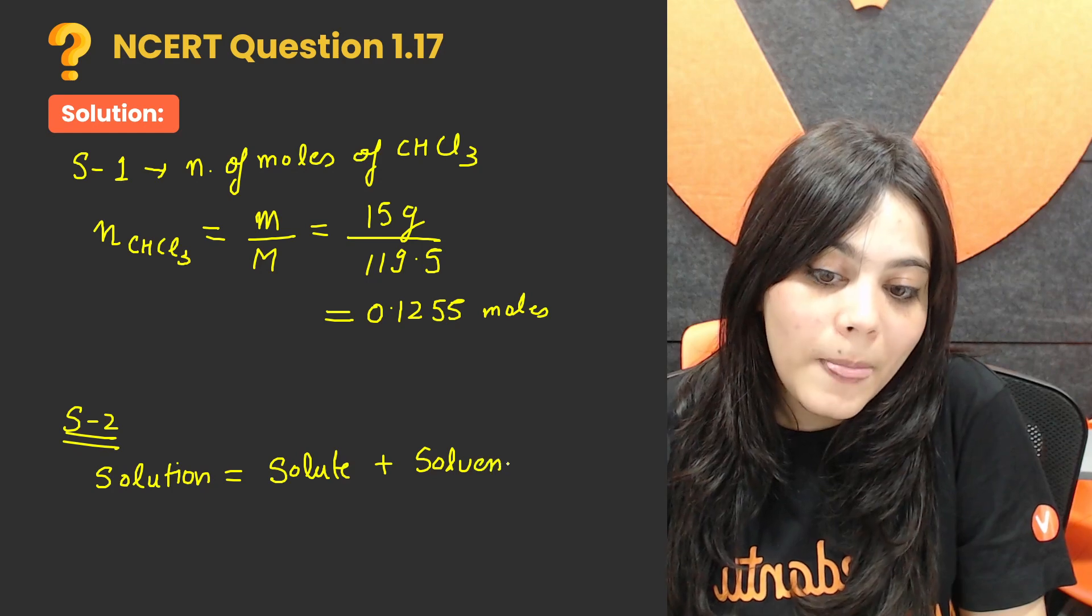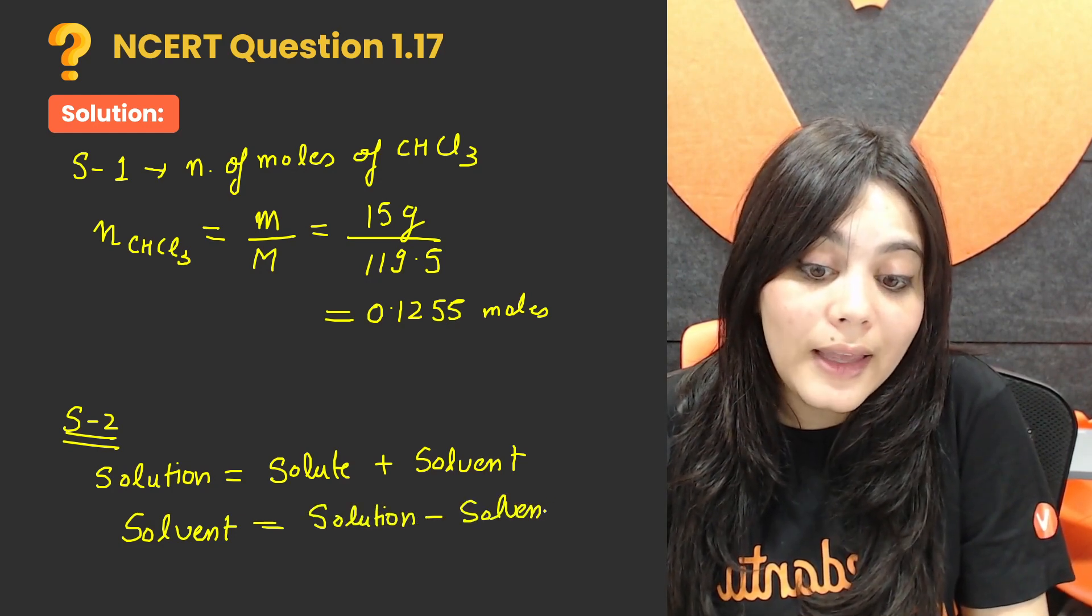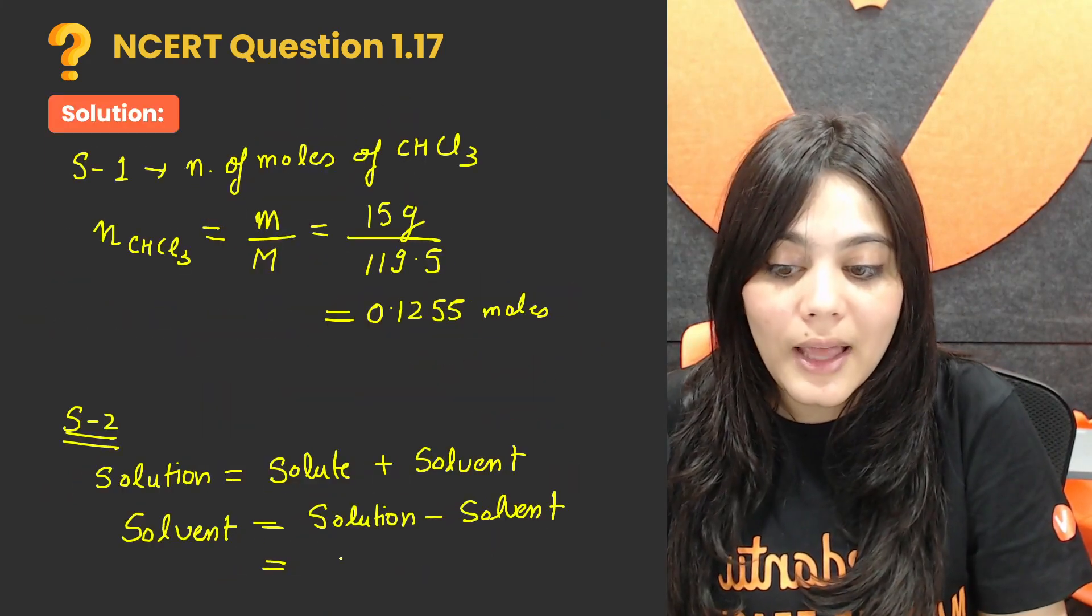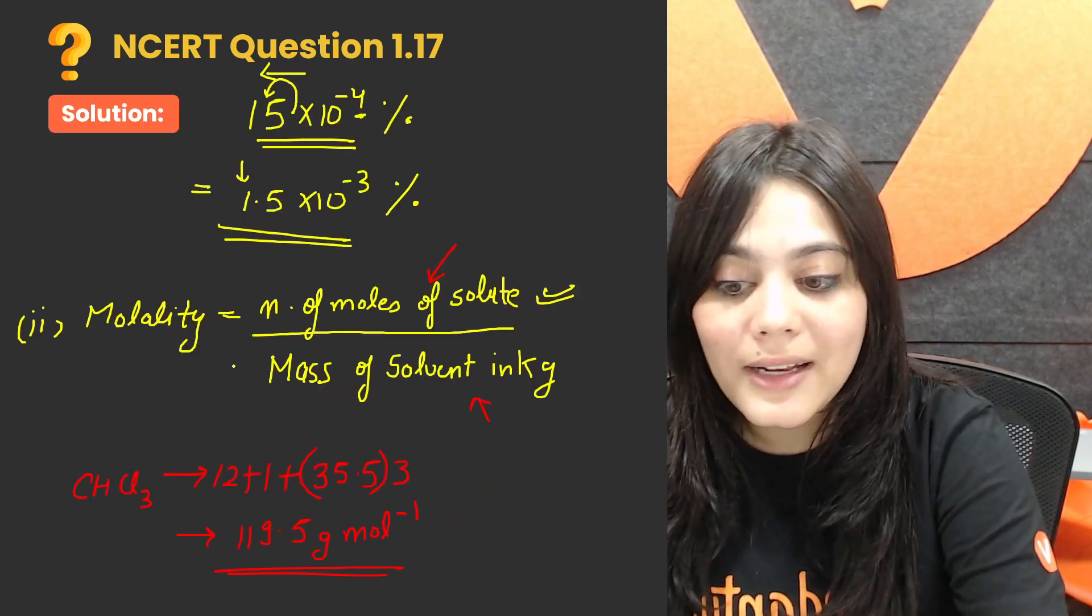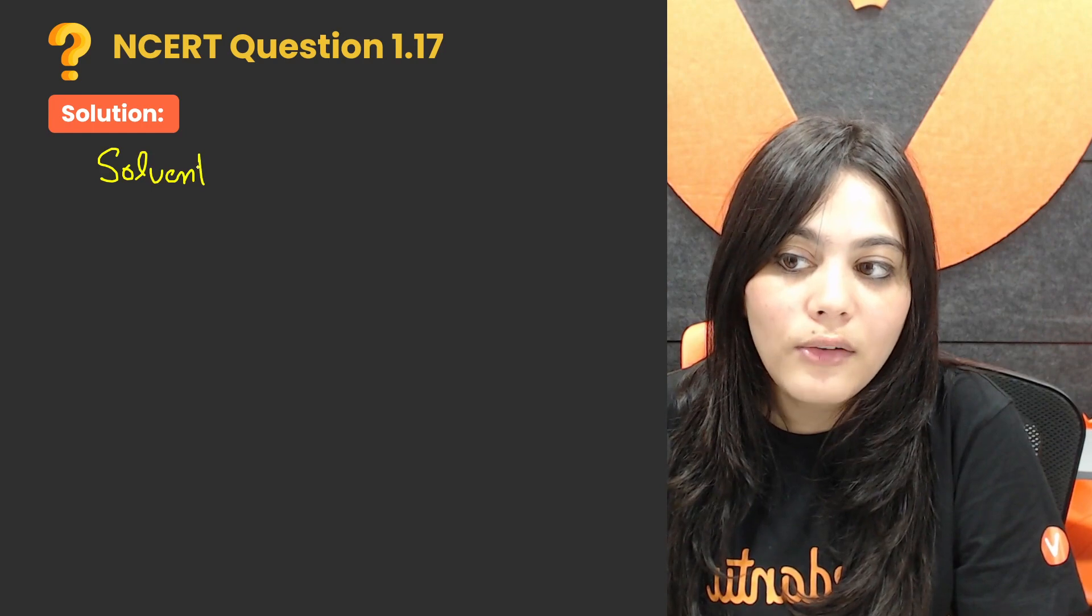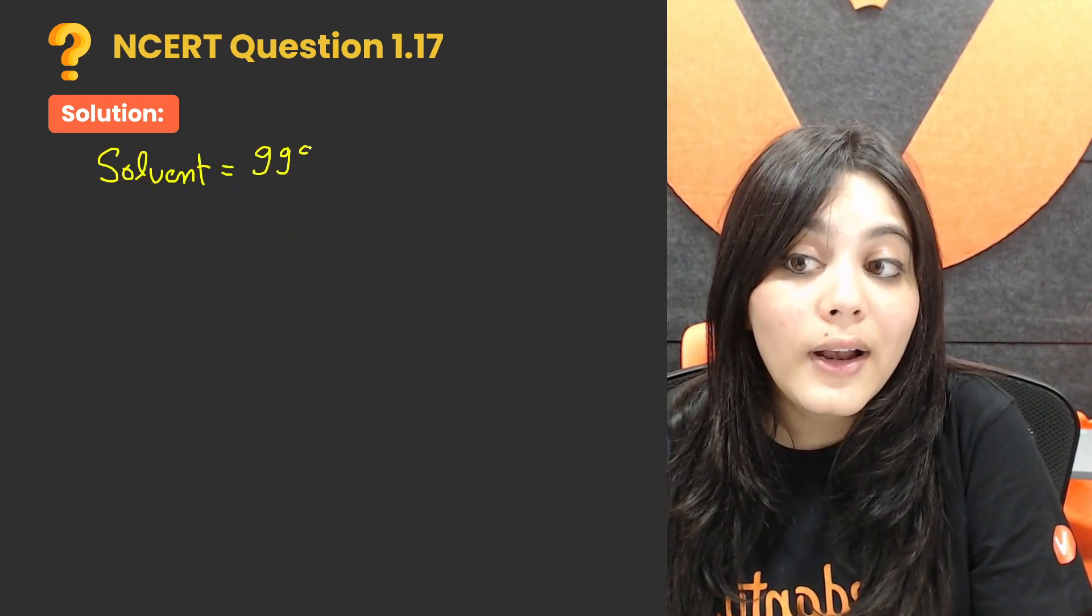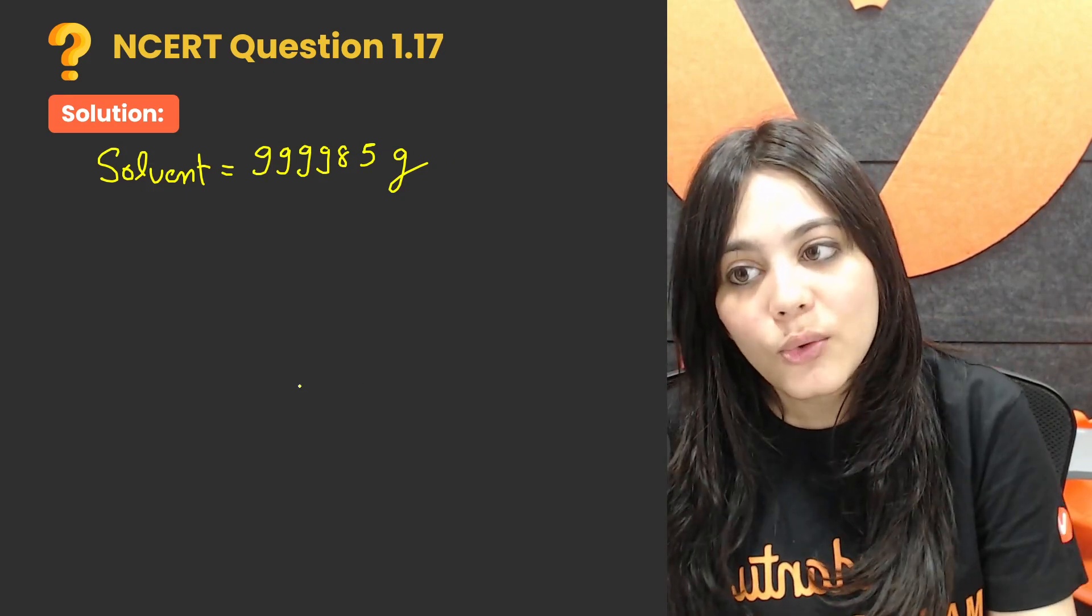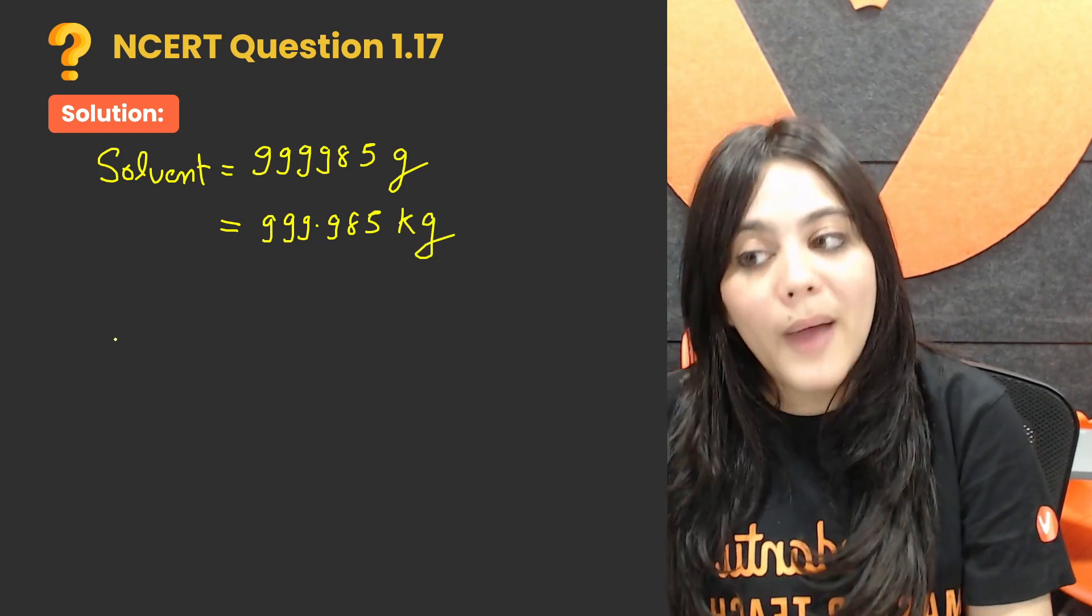Step two, now I need mass of solvent in kilogram. Mass of solvent, how do I get? Solvent is solution minus solute. I know the mass of the solution is 10 to the power 6 gram of H2O. Solution minus solvent. Solute was our chloroform, which is 15 grams. 10 to the power 6 minus 15 gives 999985 grams. Mass of solvent is 999.985 kg.